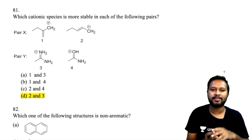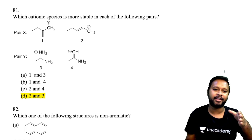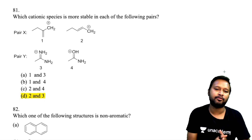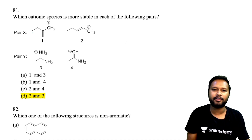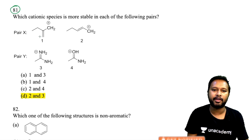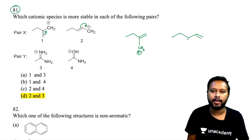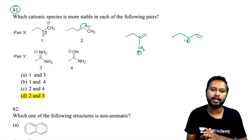The questions in the paper start from question number 80. I'll provide the PDF of the question paper with the organic chemistry portion marked with correct answers. The first question asks: which cationic species is more stable in each pair? For pair X, you do the resonance: species 1 becomes CH₂⁺, and species 2 forms a double bond with a positive charge, creating a 2° carbocation — making 2 more stable.